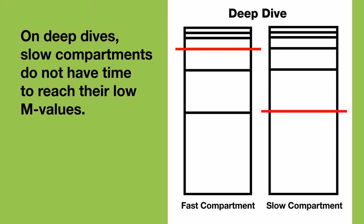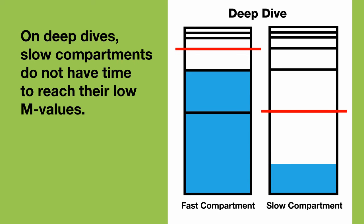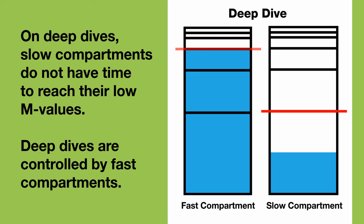Let's see what happens on deep dives and shallow dives with fast and slow compartments. On deep short dives, slow compartments do not have time enough to reach even their low M values — they do not matter. This means that deep short dives are controlled by fast compartments.